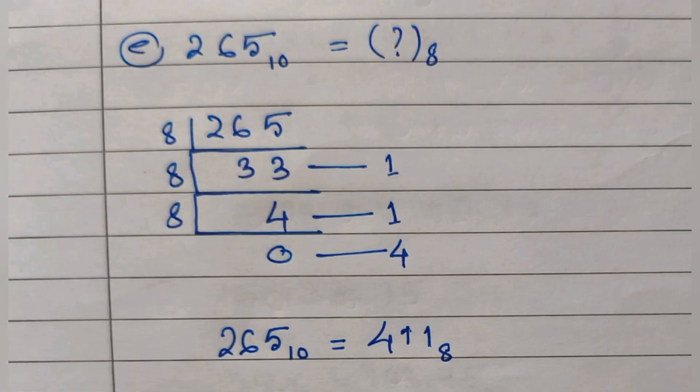For question E, we have to convert a decimal number into octal. For that we divide the number by 8, write the remainder on the right hand side, and continue the division until we get a number that cannot be divided by 8 or until we get 0. The answer is 411.